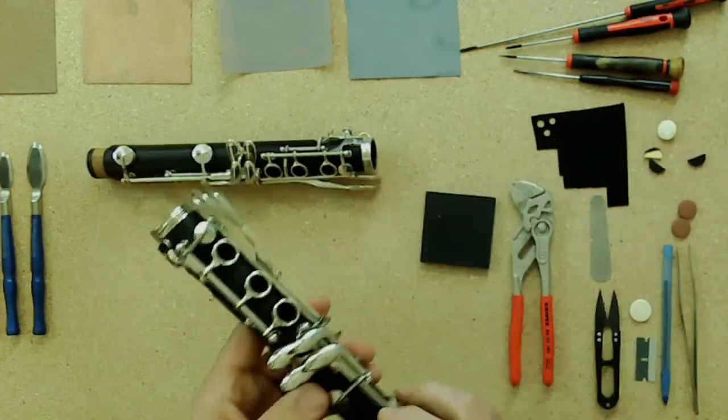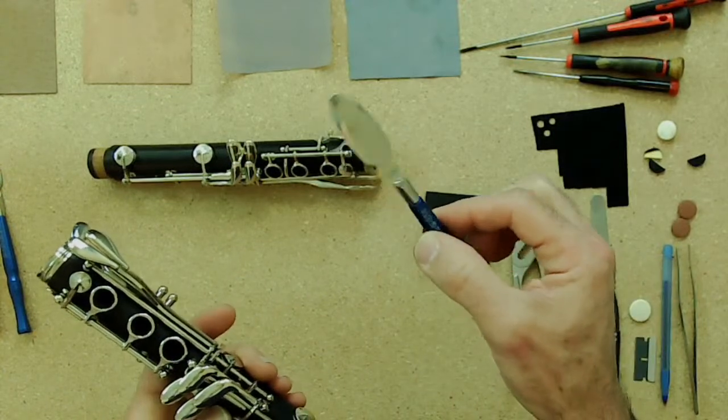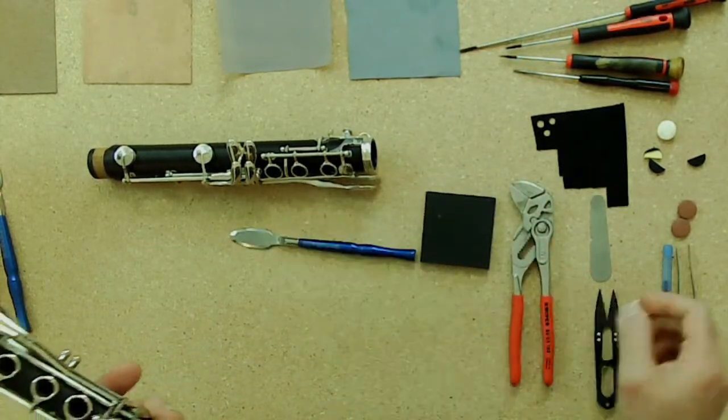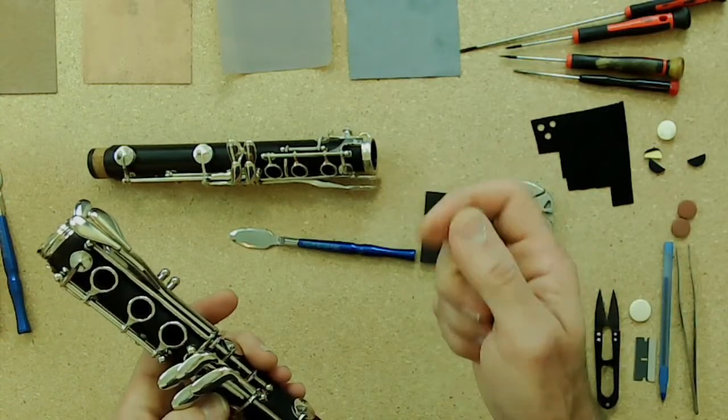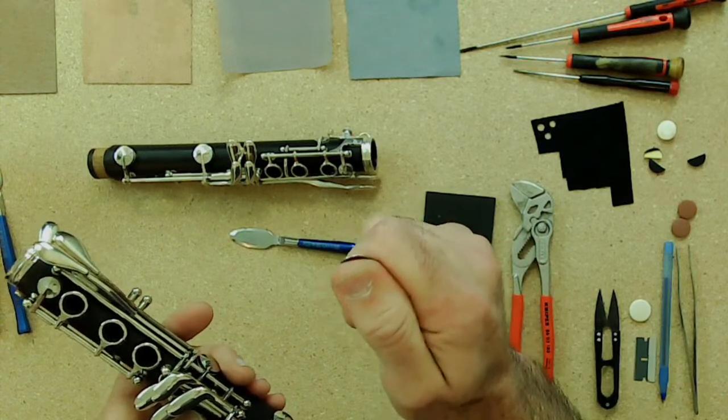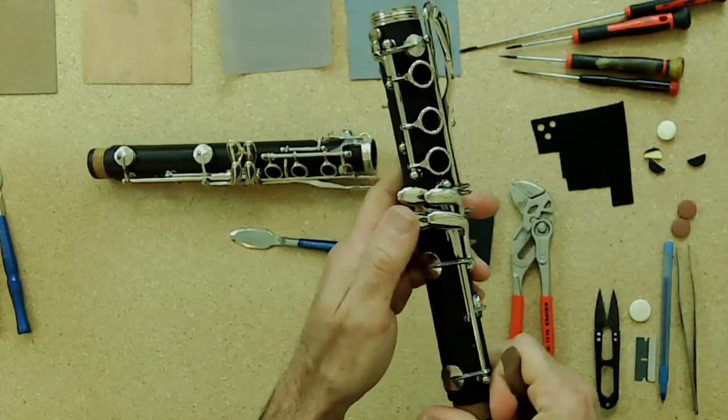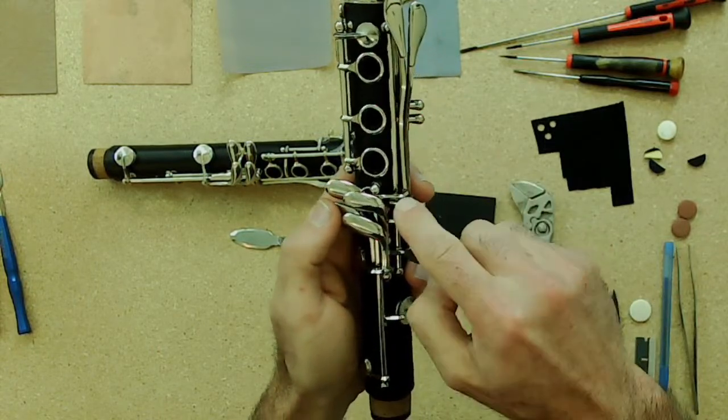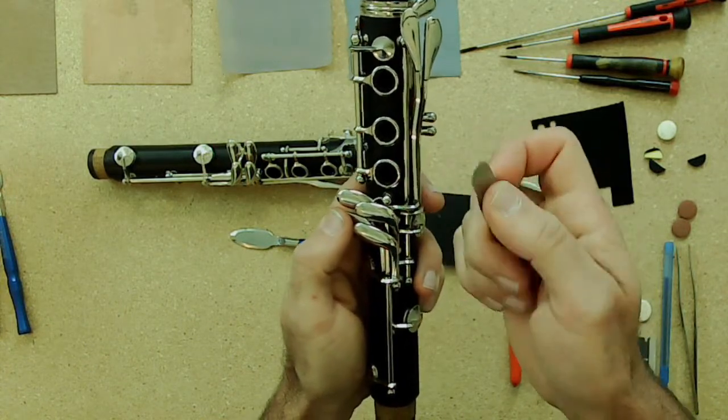So basically what you want to do is you're going to want to either grab one of two things, either a pad slick like this with a handle so you have a little bit of extra grip on there, or just a regular old pad slick like this that you can put in your hand between your thumb and the key.